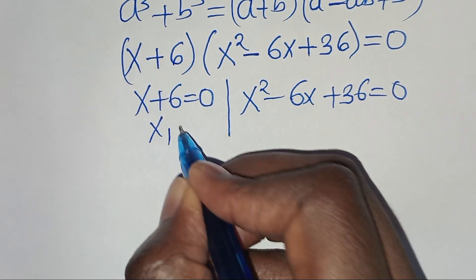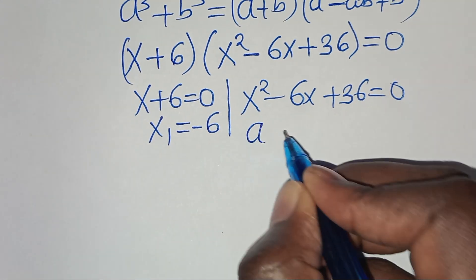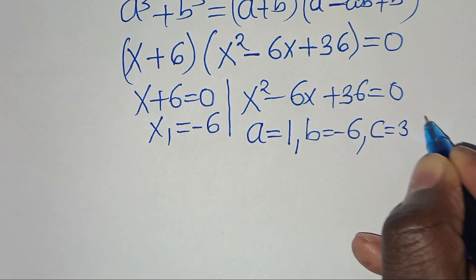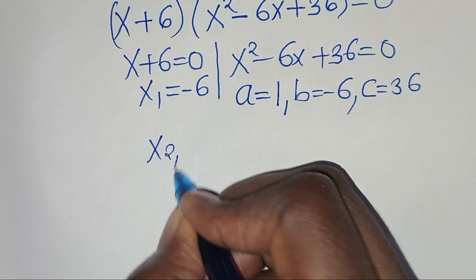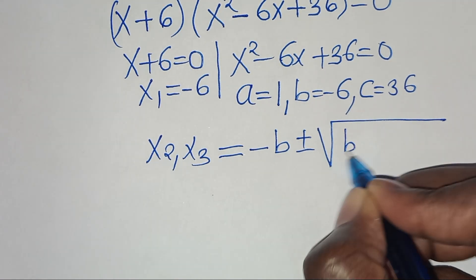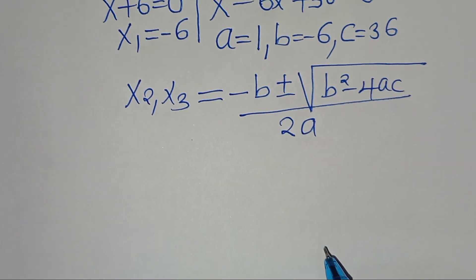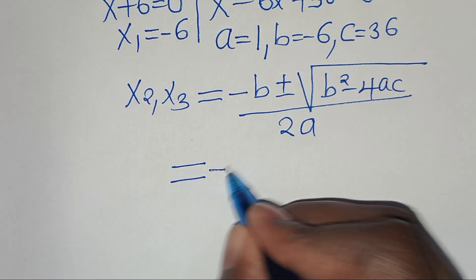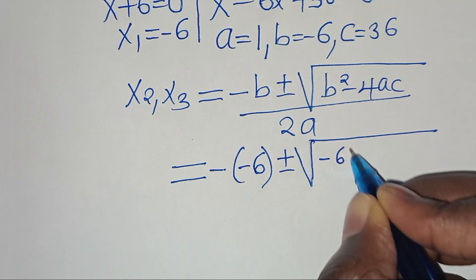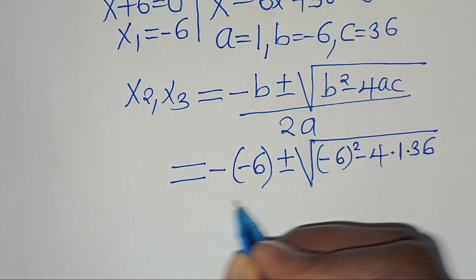From the first part, x1 equals minus 6. The second part is a quadratic equation with a = 1, b = -6, and c = 36. We can solve for x2 and x3 by applying the quadratic formula: minus b plus or minus the square root of b² minus 4ac, all divided by 2a. Substituting, we have minus(−6) plus or minus the square root of (−6)² minus 4(1)(36), divided by 2(1).